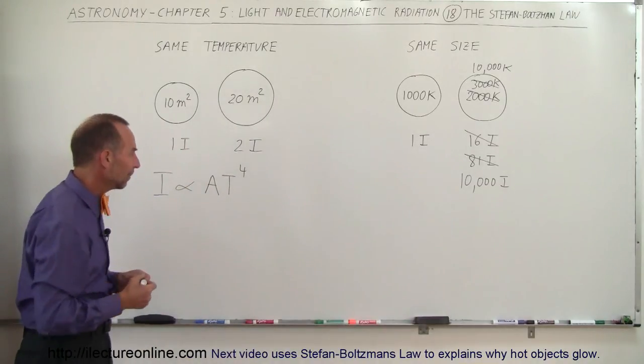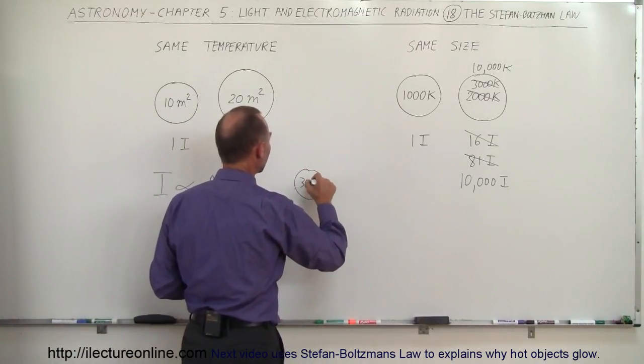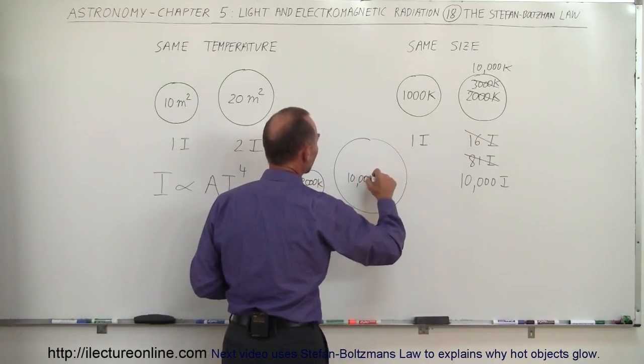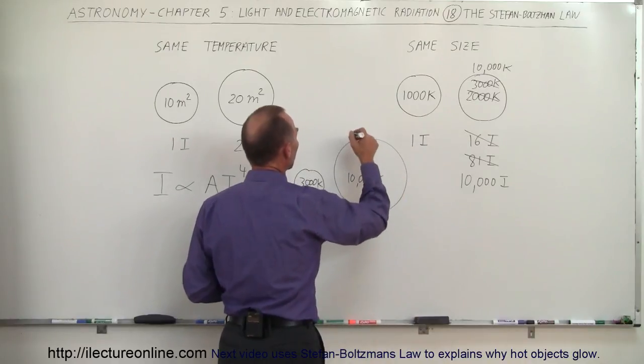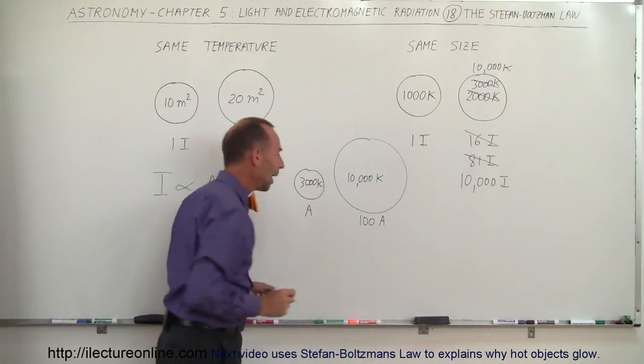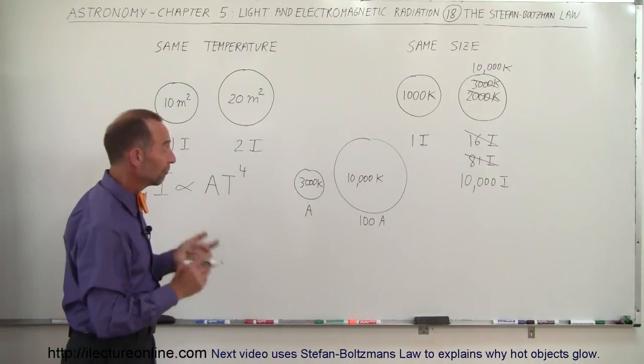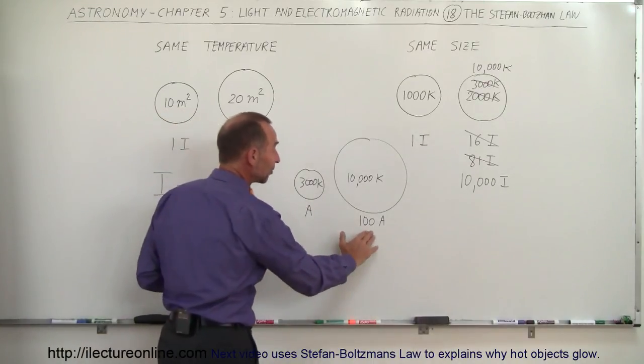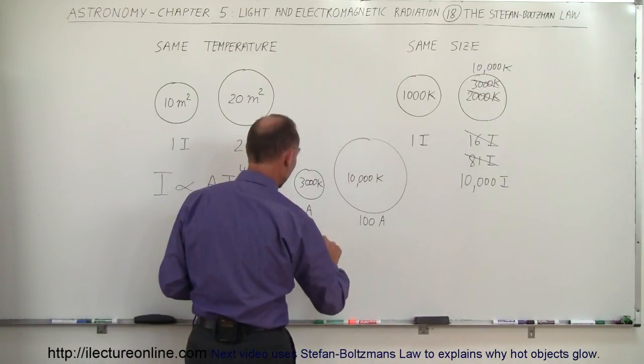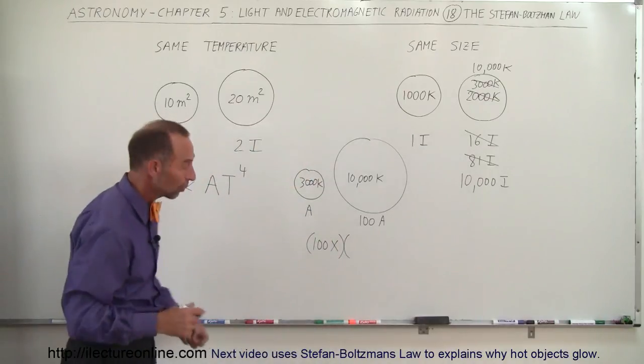Let's do an example. Let's say we have one star at 3,000 Kelvin and another star at 10,000 Kelvin, and that star has a surface area, if this one is A, maybe this one has 100 A. How much more radiation would you get from this bigger, hotter star? First, if it's 100 times the surface area, you would expect 100 times as much energy.